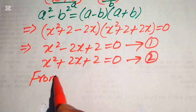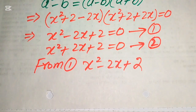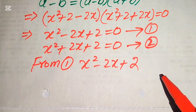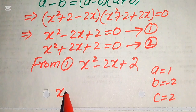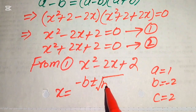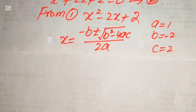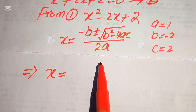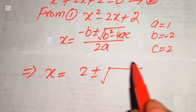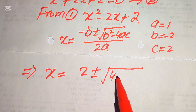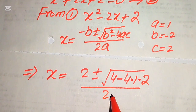We focus on equation number 1: x² minus 2x plus 2 equals 0, and apply the quadratic formula. The coefficients are a equals 1, b equals minus 2, and c equals 2. The quadratic formula gives x equals minus b plus or minus square root of b² minus 4ac, divided by 2a. Substituting: x equals minus(minus 2) plus or minus square root of (minus 2)² minus 4 times 1 times 2, divided by 2 times 1.